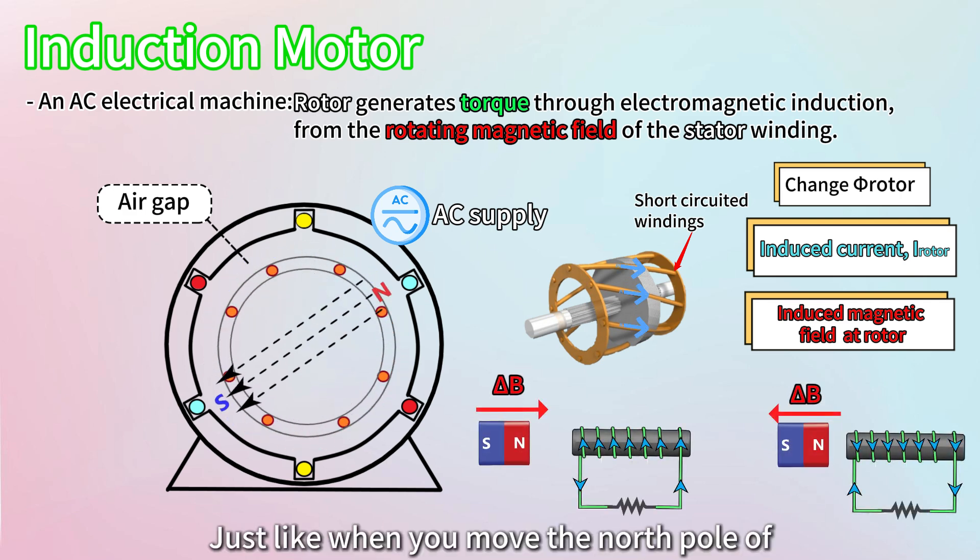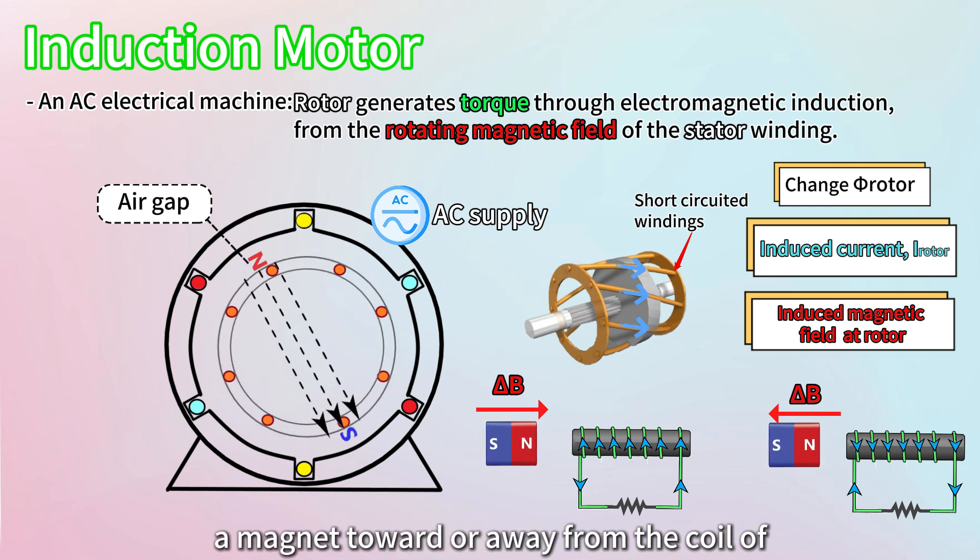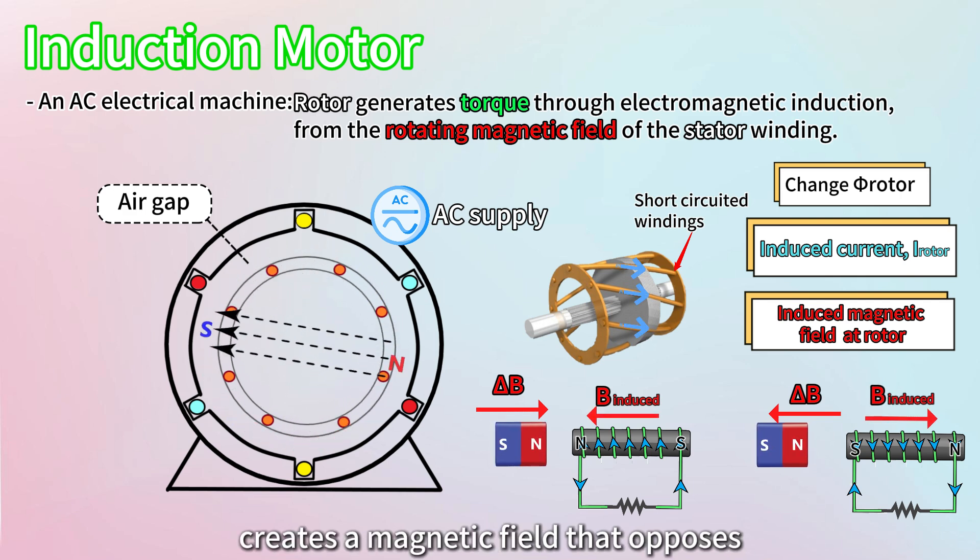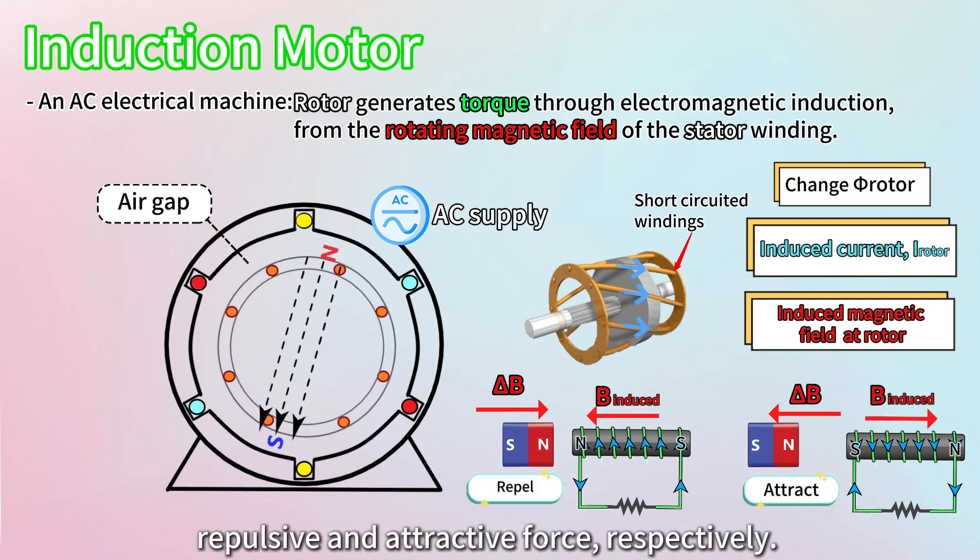Just like when you move the north pole of a magnet toward or away from the coil of wire, the current induced in the coil creates a magnetic field that opposes that motion, and you may experience a repulsive and attractive force, respectively.